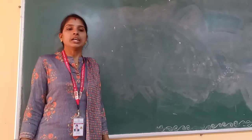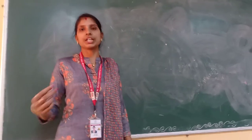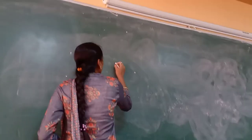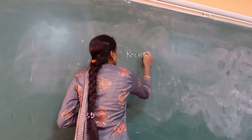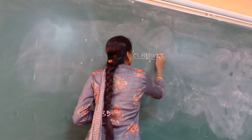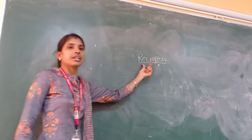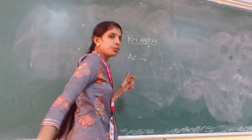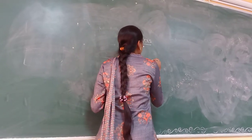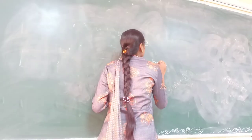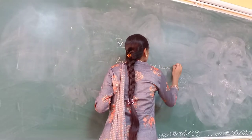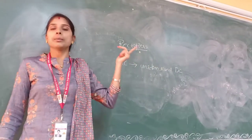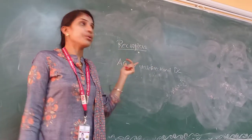First of all, what is a rectifier? A rectifier is a device which converts alternating current into pulsating DC, that is unidirectional DC. It converts alternating current into unidirectional DC. One of the major applications of the diode is the rectifier.